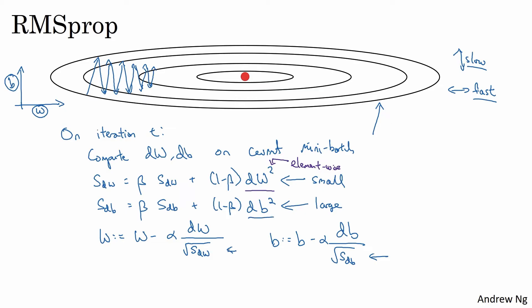And so dB squared will be relatively large, so sdB will be relatively large. Whereas compared to that, dW will be smaller or dW squared will be smaller and so sdW will be smaller. So the net effect of this is that your updates in the vertical direction are divided by a much larger number, and so that helps damp out the oscillations.